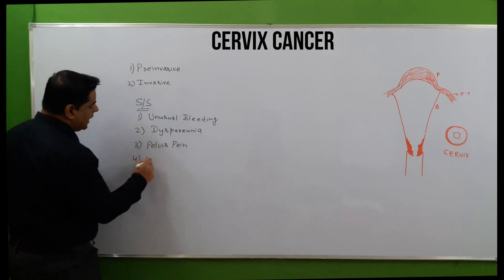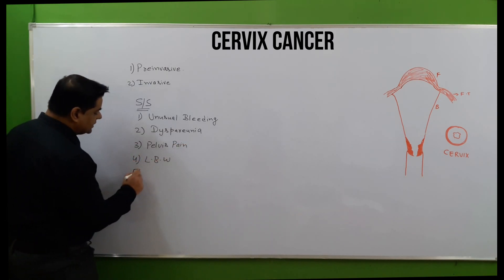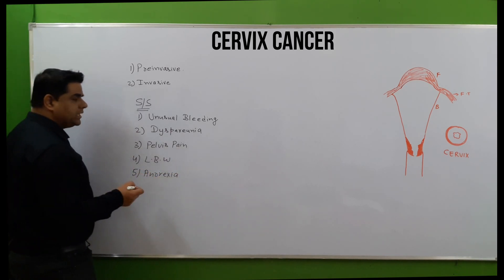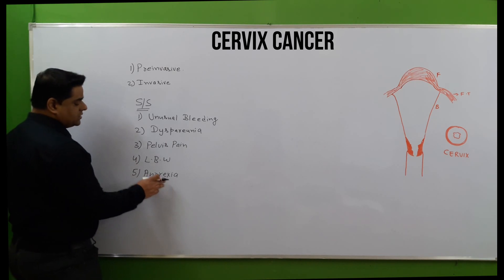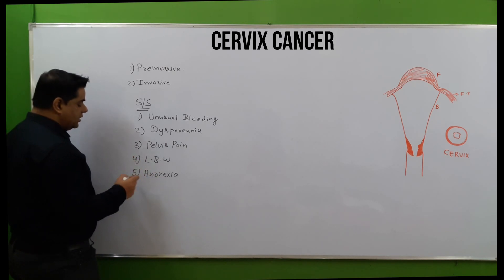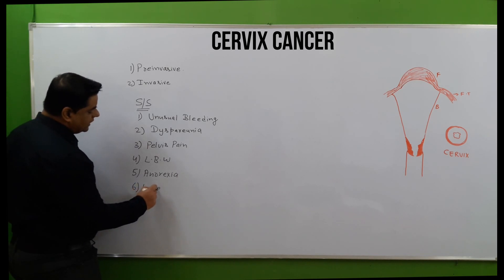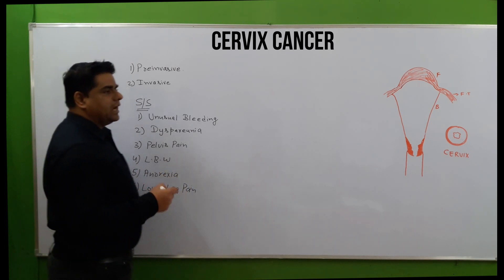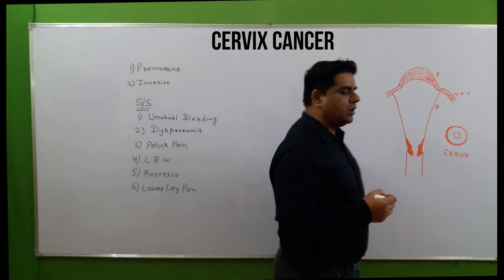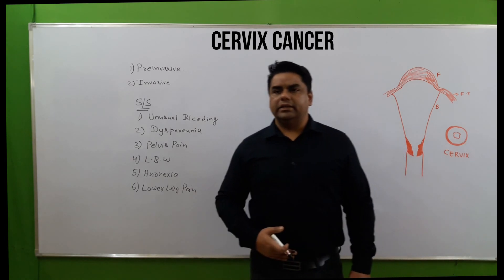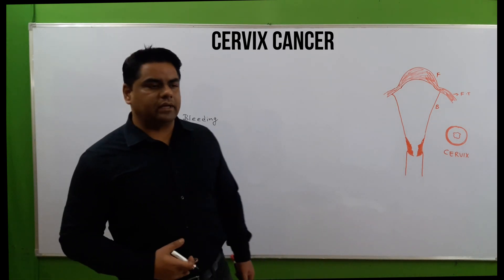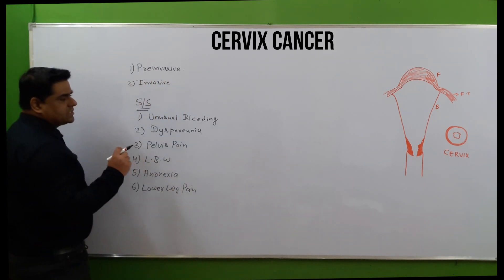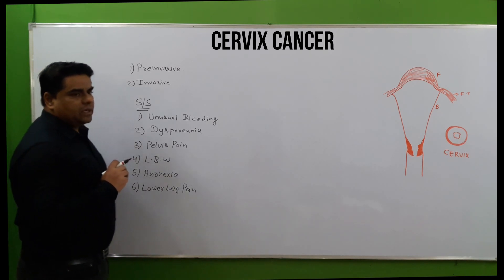Pelvic pain can be present in females, as well as low back pain. Anorexia can also occur — females when distressed may avoid food due to mood changes. Lower leg pain can be present, and abdominal pain can be felt in the epigastric and umbilical areas in cases of cervical cancer.